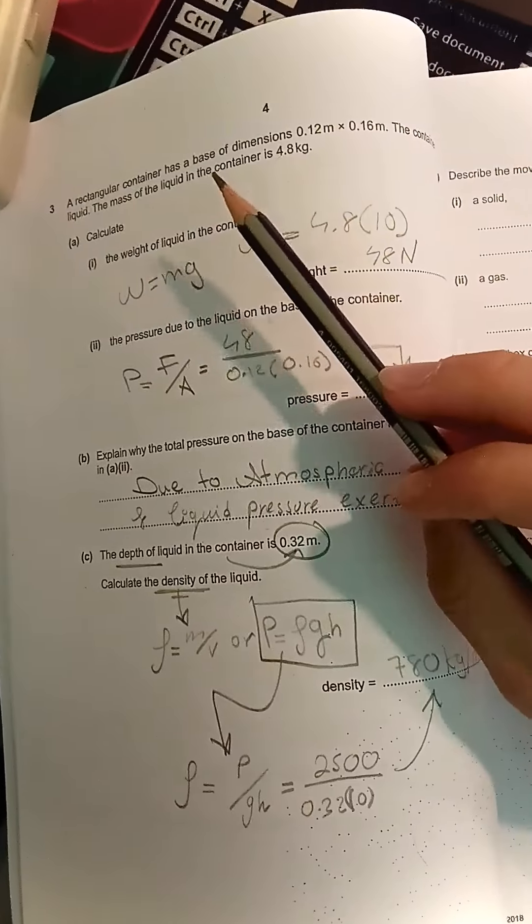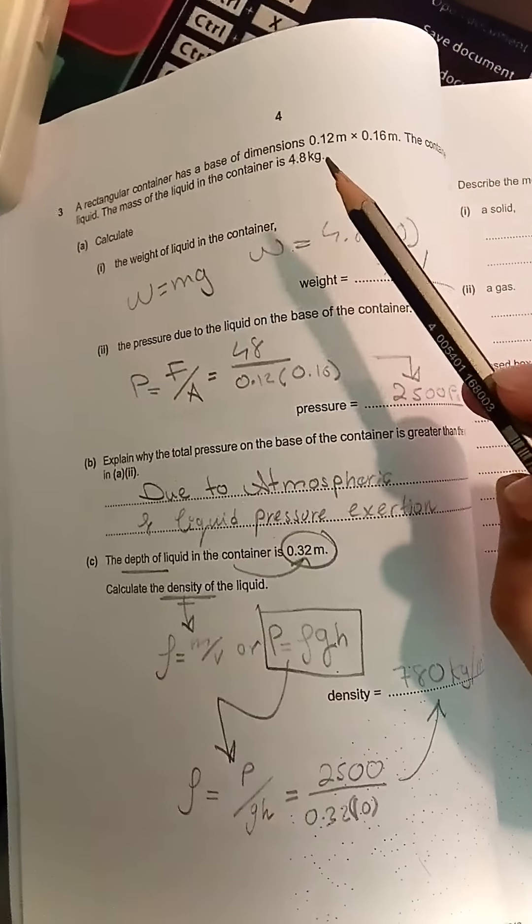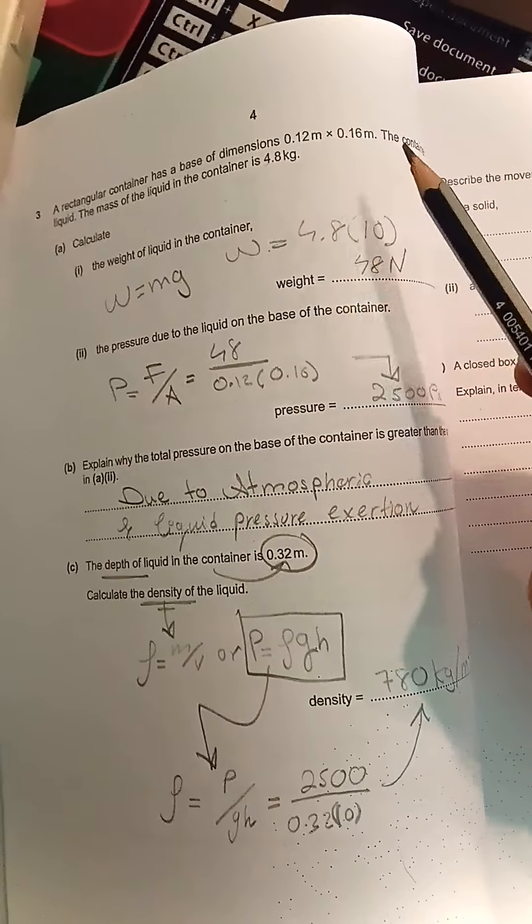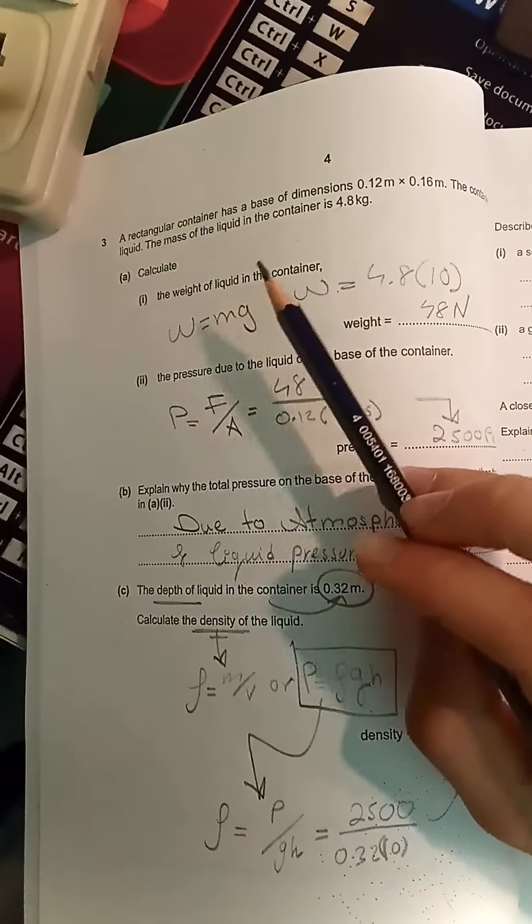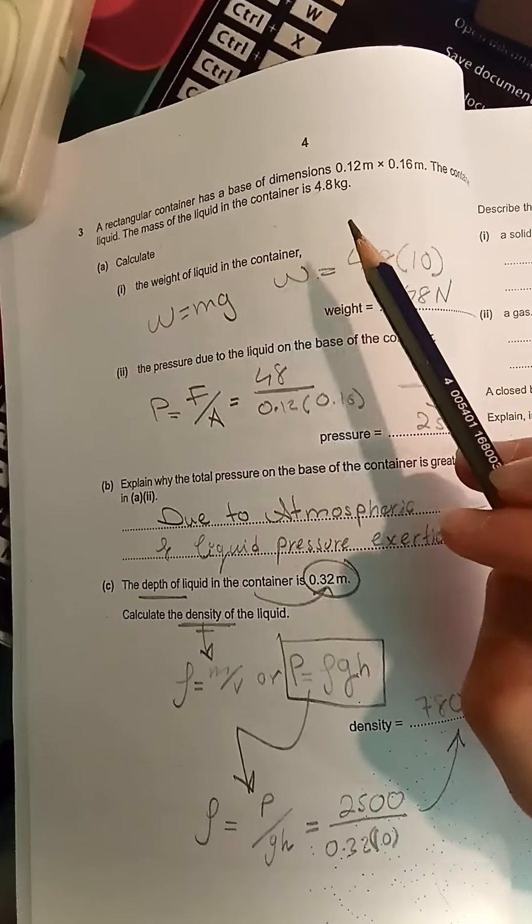A rectangular container has a base of dimensions 0.12 meters by 0.16 meters. The container is filled with liquid, and the mass of the liquid in the container is 4.8 kilograms.